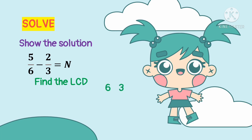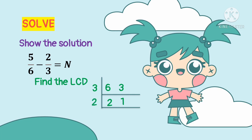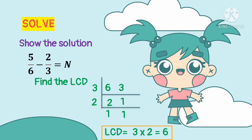Using continuous division to find the LCD of 6 and 3: divide both by 3, giving us 2 and 1. Then divide 2 by 2, giving 1. Bring down the 1. Since we have two numbers from the left side of the division, we multiply them: 3 times 2 equals 6. So the LCD is 6.